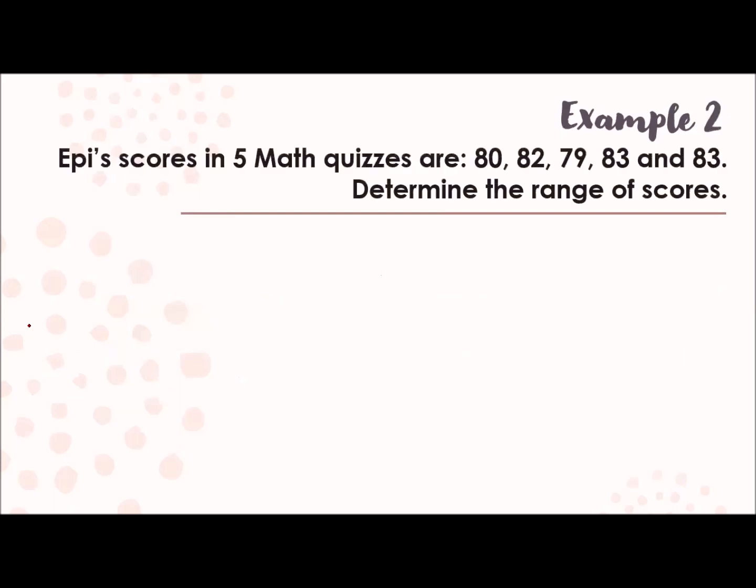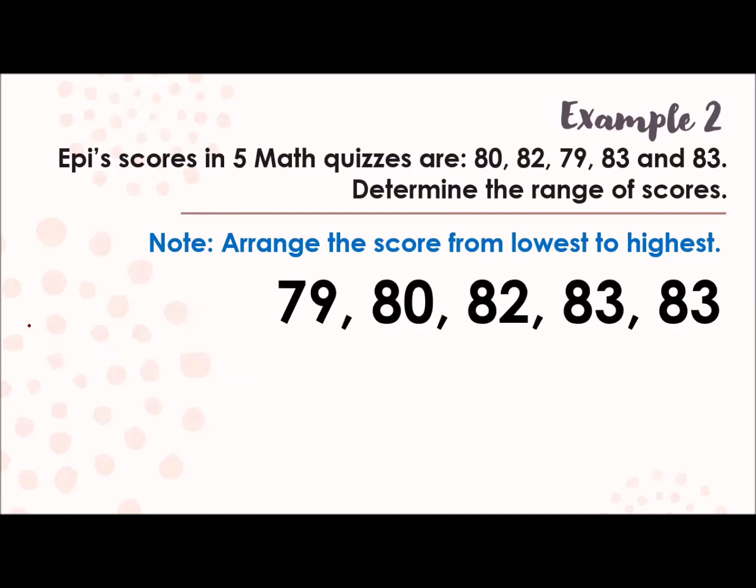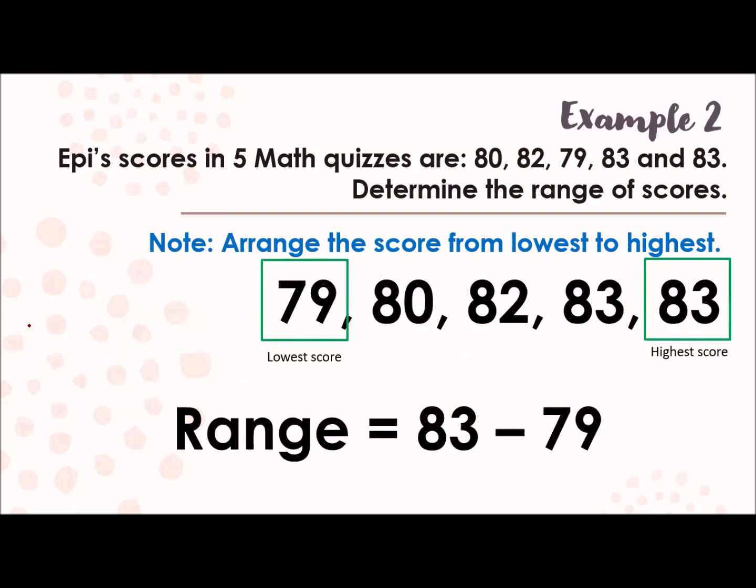Now, let's have the same set of numbers, but the question now here is the range. So let's revisit the range. The scores should be arranged again from lowest to highest. Then identify the lowest score, which is 79, and the highest score is 83. Then just subtract them. Get its difference. So the answer here is 4. Very good. And that is the range.